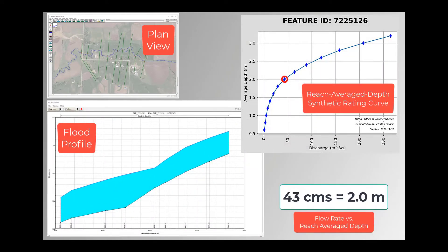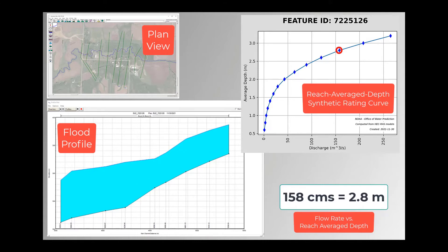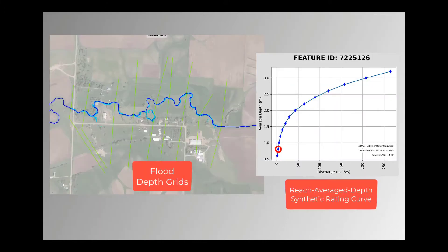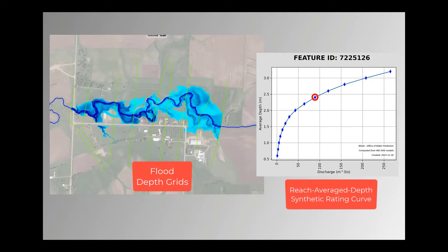Combined, this analysis creates a reach average synthetic rating curve. For each reach in the National Water Model where provided HEC-RAS model conflates, a synthetic rating curve is stored to determine what flood map should be used at a given flow rate. At even average depth intervals along the synthetic rating curve, flood inundation depth grids are computed against either user-supplied terrain data or terrain served by the USGS 3-DEP service.